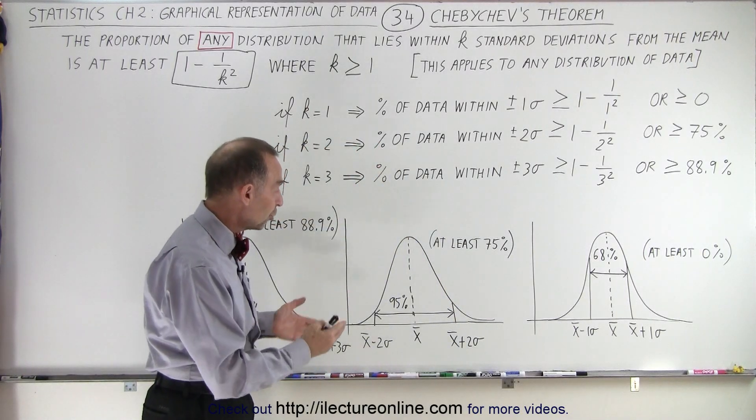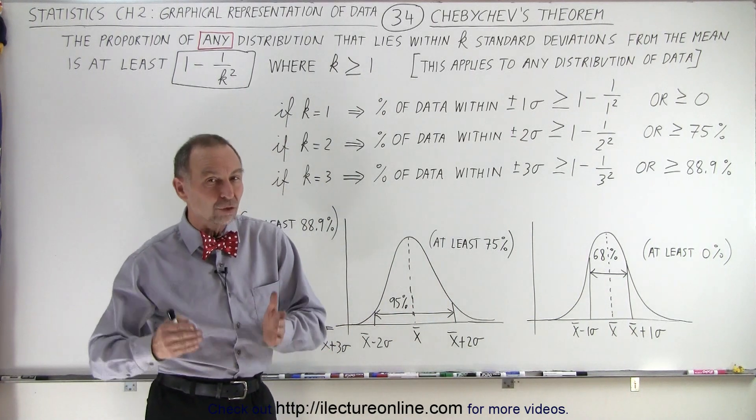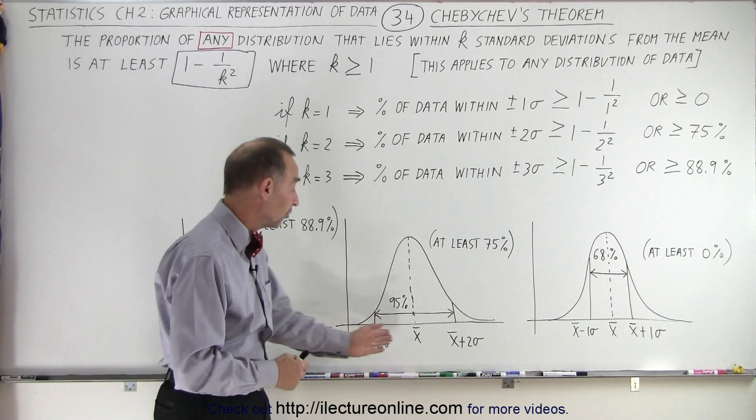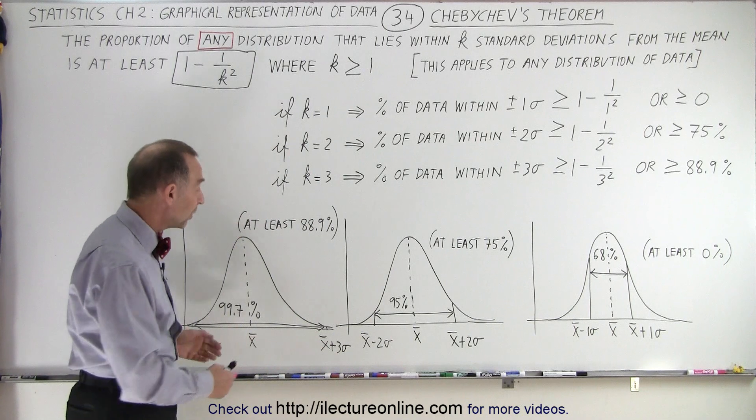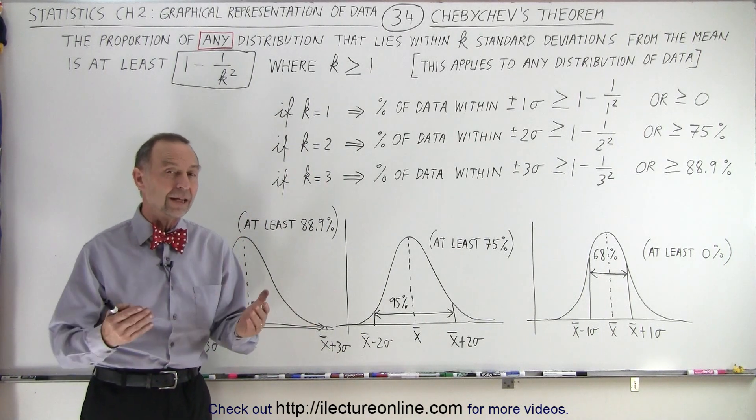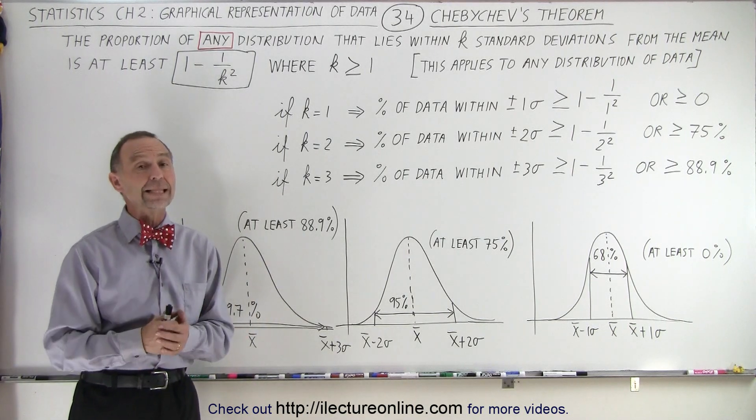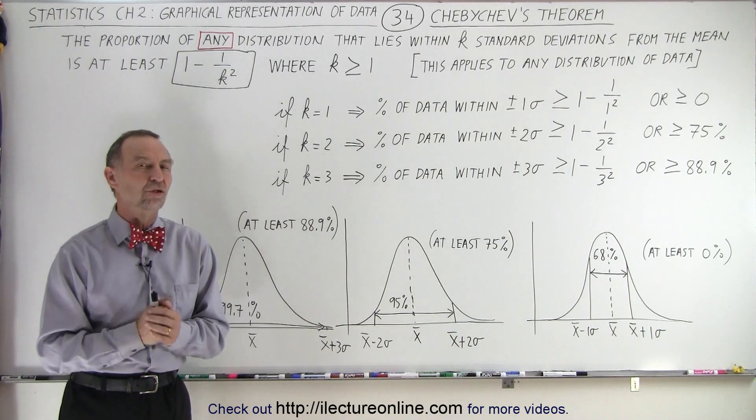And for normal distribution, we expect 95% of the data to fall within plus or minus two sigma, two standard deviations from the mean, and we expect almost 100%, 99.7% of all the data to fall within plus or minus three sigma from the mean if the data distribution is normal.